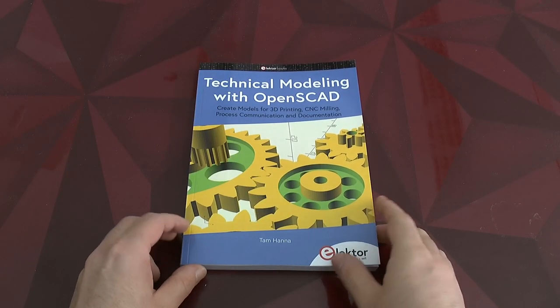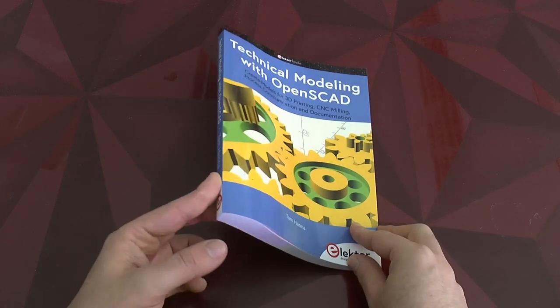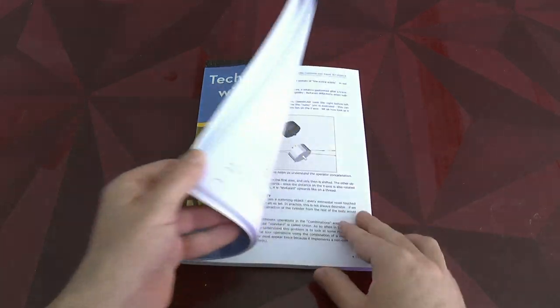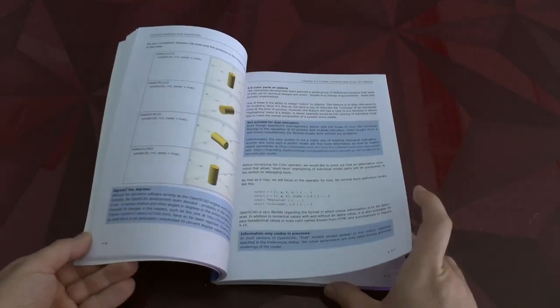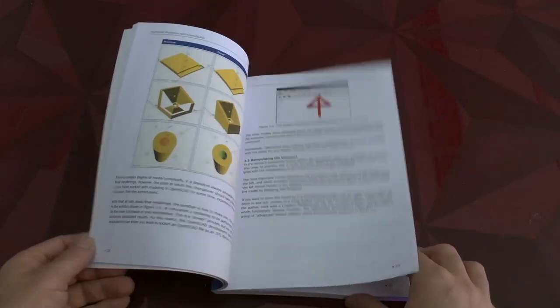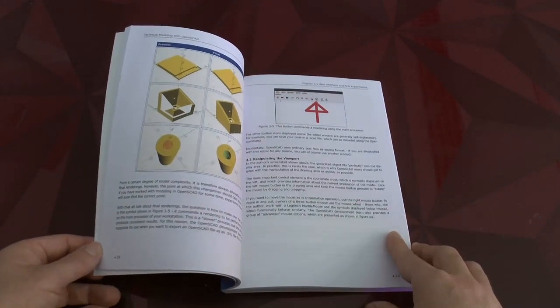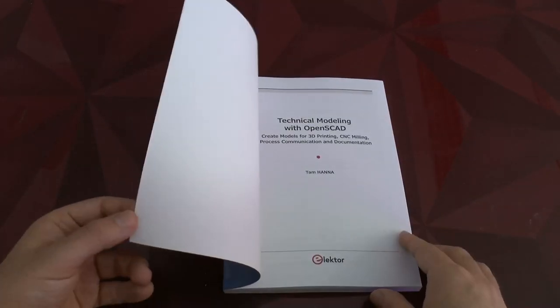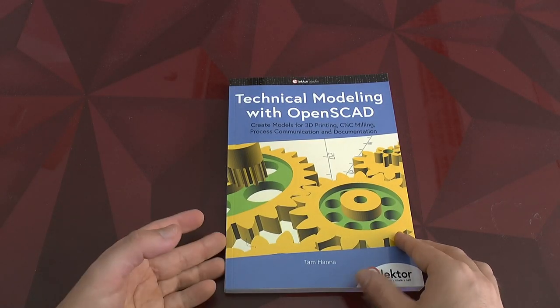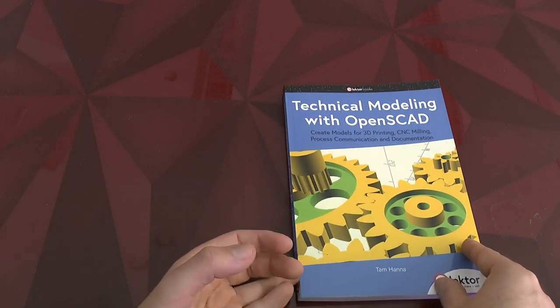As you see here this is the English edition. The outside is pretty robust, it's color printed and the cool thing is the inside is also fully colored. This is one of the first books made in the new generation of Elektor's printing process and it's fully colored throughout the entire tome.